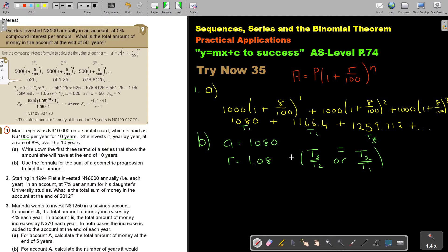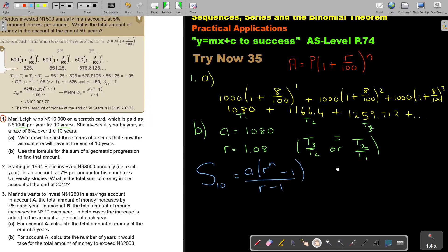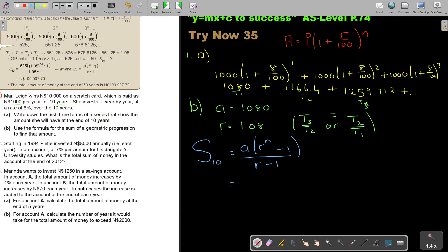So now if I'm going to start with my sum, the value of N is 10, the value of R is bigger. So it's A times R to the power of N minus 1, divided by R minus 1. And then it's 1080 times 1.08 to the power of 10 minus 1, divided by 1.08 minus 1.